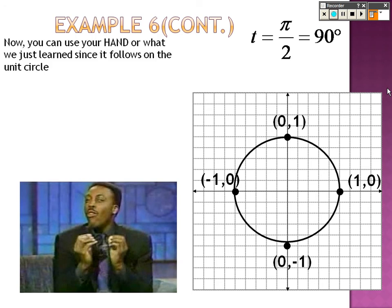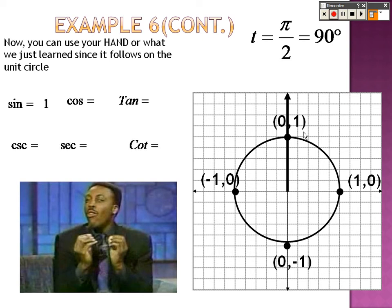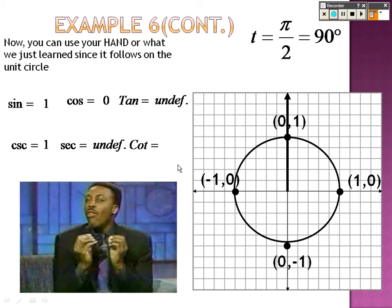For pi over 2, you don't need your hand since pi over 2 is right on the axis. X is cosine, y is sine. So sine is 1 and cosine is 0. Tangent is y over x, or 1 over 0, which is undefined. Flipping sine of 1 gives 1 for cosecant. Flipping cosine gives 1 over 0, which is undefined for secant. And flipping something undefined means there's now a 0 on top, so 0 divided by anything is 0 for cotangent.